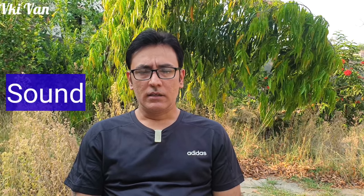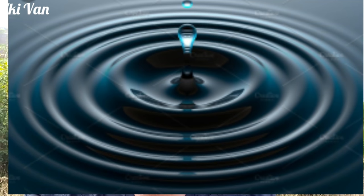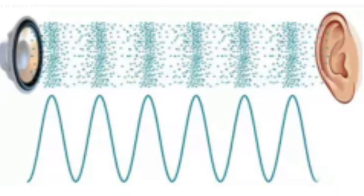Sabse pehle hum samajhte hain ki sound kya hai. Sound ek tarang hai jo hamare environment mein chalti rehti hai. Example lete hain: pani mein pheka hua patthar, pani ko touch karne ke baad apni tarangen charon taraf failata hai. Sound bilkul waise hi kaam karta hai. Jaise hi aap kuch bolte hain ya kisi speaker se thodi si bhi sound nikalti hai, to irdgird ke area mein woh apni taranghe phailaata hai. Woh kitni tez hai ya kitni dhimi — yeh decide karta hai humara Amplitude.